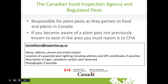In Canada, the Canadian Food Inspection Agency is responsible for plant pests as they pertain to food and plants in the country. If you become aware of a plant pest not previously known to exist in the area, you must report it to the CFIA. To report, send by email: your name, address, phone number, email, photographs of the pest if possible, a description of signs and symptoms, and a general location. If you ever have questions about how to report to CFIA, feel free to contact me by email.